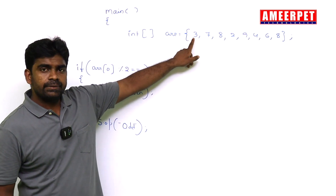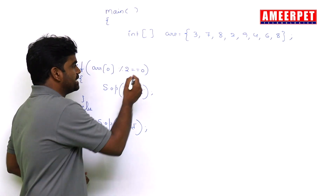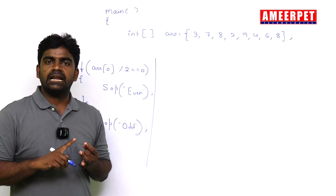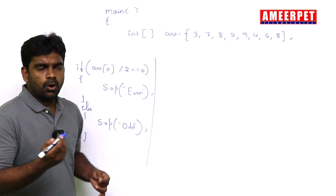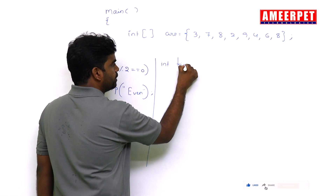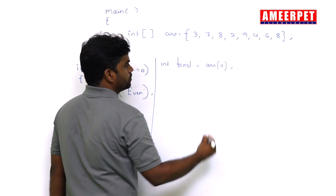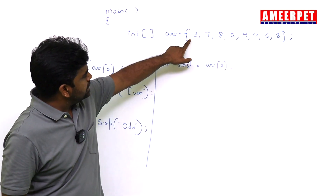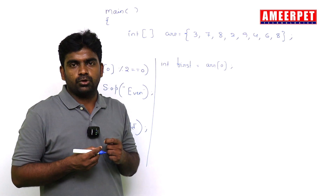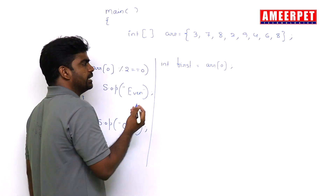The second question is: find the sum of the first and last elements of the array. We can take the first element directly as arr[0], because the first element is always at index zero. But the last element is not at index zero — it is at index length minus one, so we collect the length into a variable n.